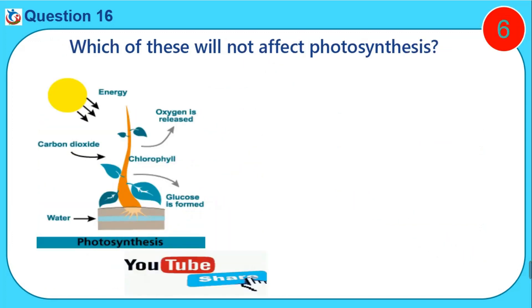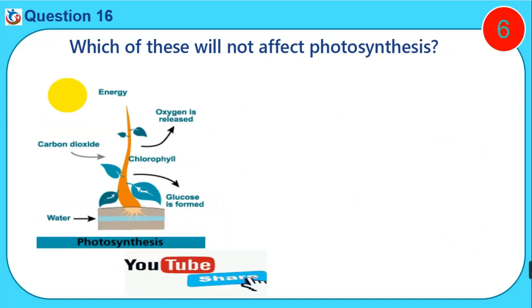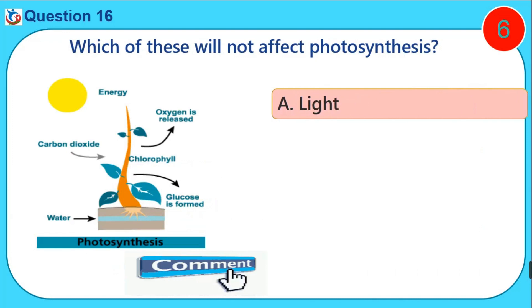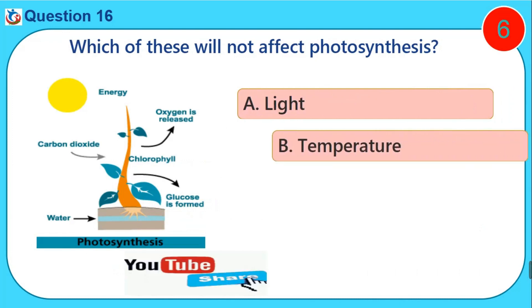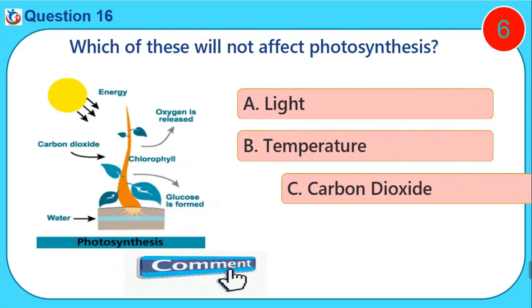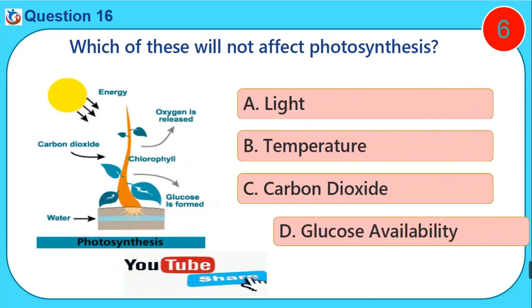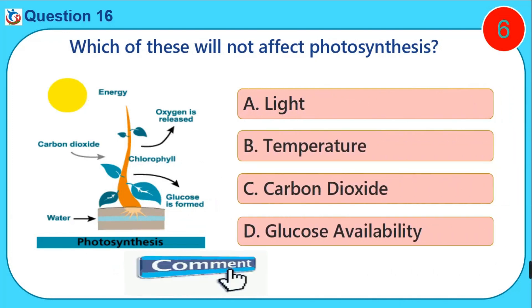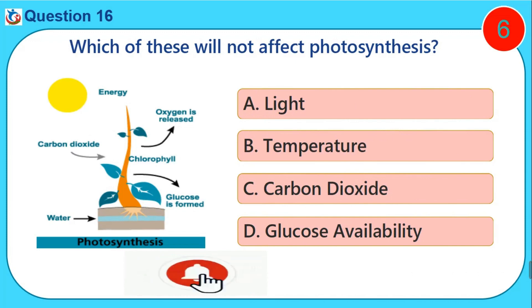Which of these will not affect photosynthesis? A. Light. B. Temperature. C. Carbon dioxide. D. Glucose availability.